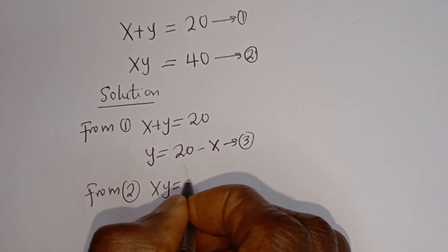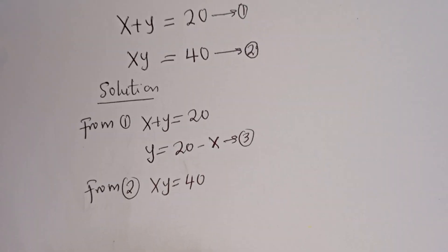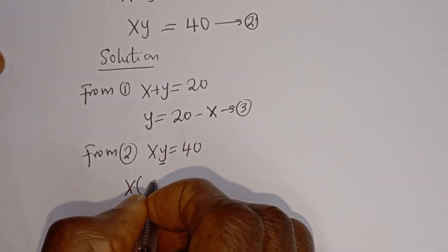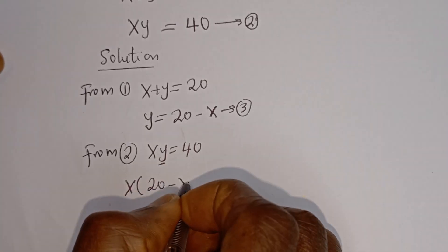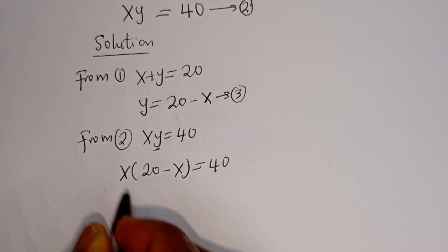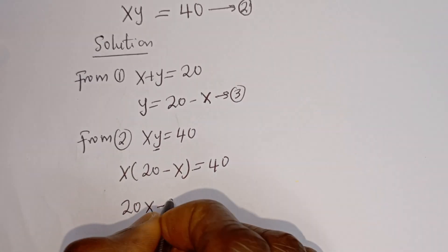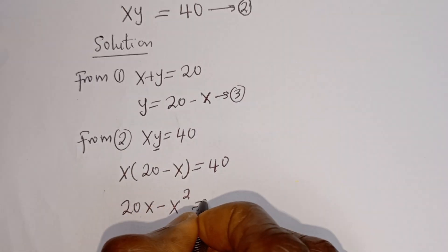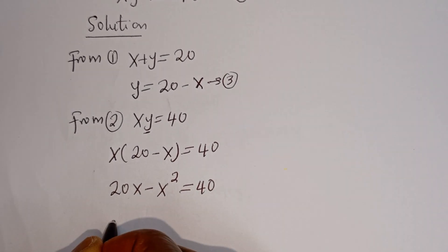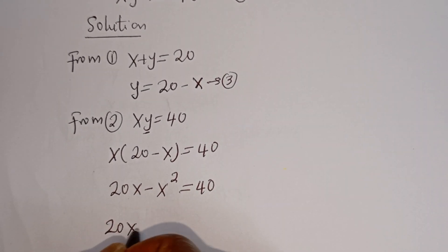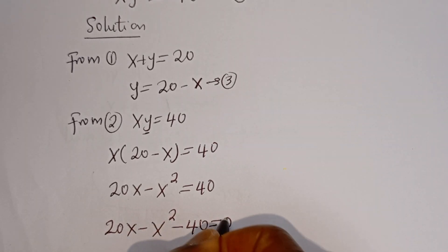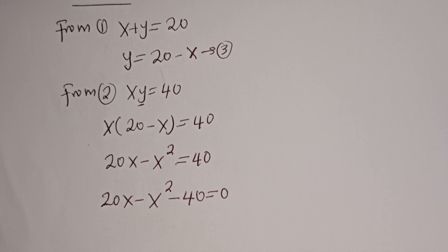xy is equal to 40. Let's substitute for y here: x times (20 minus x) is equal to 40. Let's open the bracket: we have 20x minus x² is equal to 40. Let's bring the 40 to this side: 20x minus x² minus 40 is equal to 0.